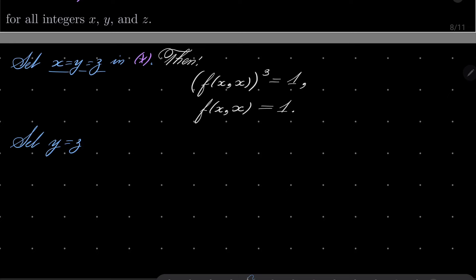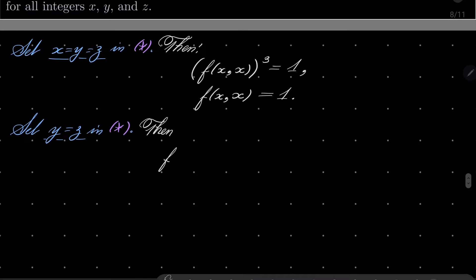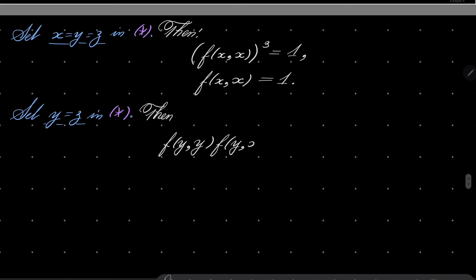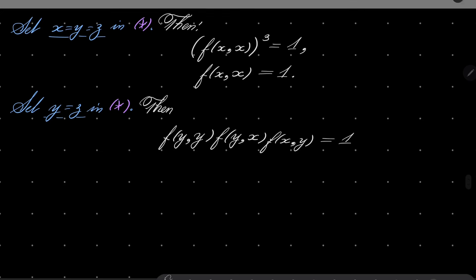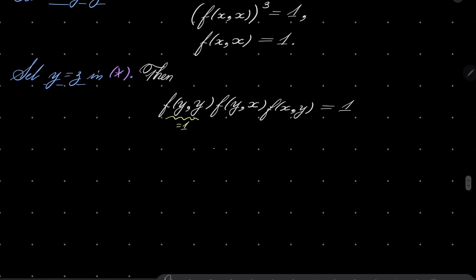Then, set just y and z to be the same in our equation asterisk. What then? Then we have f(y,z), but z is y, so f(y,y), f(y,x), f(x,y) equals 1. Now, f(y,y) is 1, as we know it, so we can actually invert and we'll get f(y,x) equals 1 over f(x,y). Let's remember this and let's also remember that.